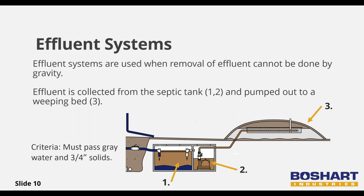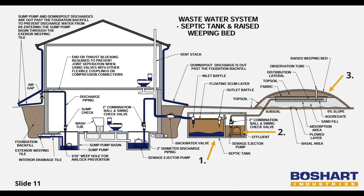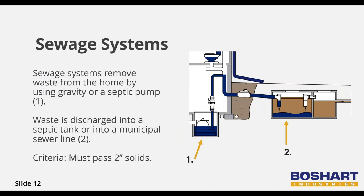Effluent, also referred to as gray water, collects in the septic tank as it separates from solid waste (arrow one). In an effluent system, that gray water then flows and is stored in an effluent tank (number two), where a sewage ejector pump can discharge the waste to a weeping bed or municipal piping for treatment (arrow three). The septic tank may not collect all solids, so the effluent pump discharge piping and check valve must handle three-quarter inch waste or larger.